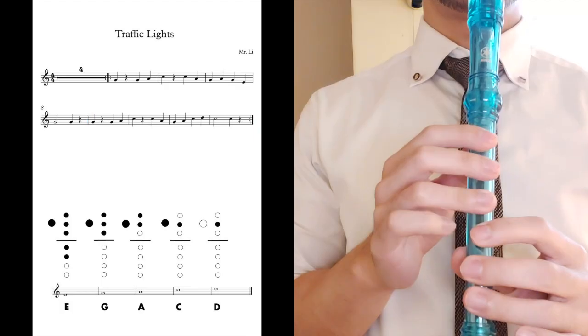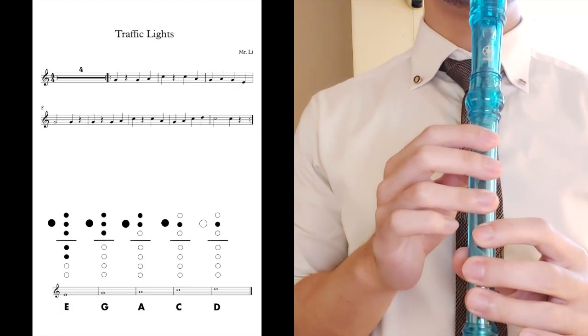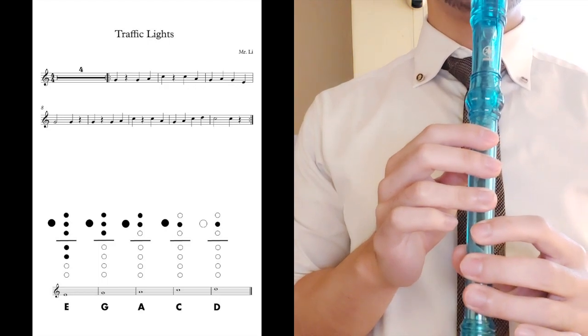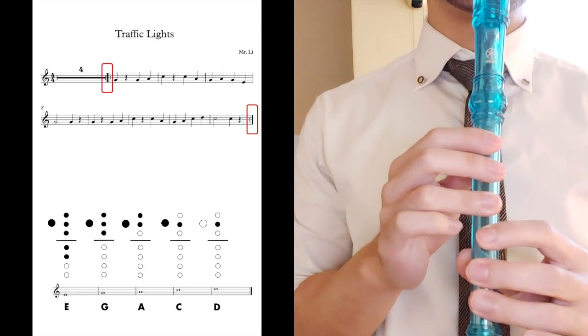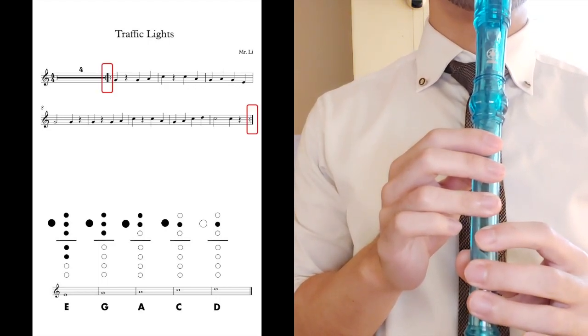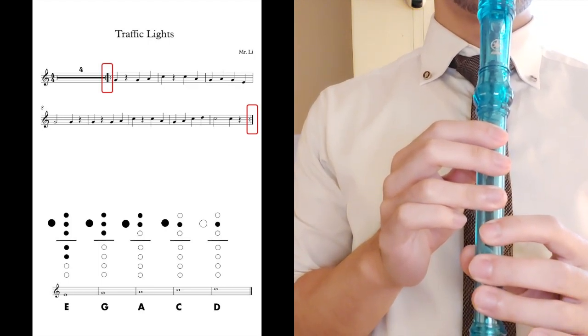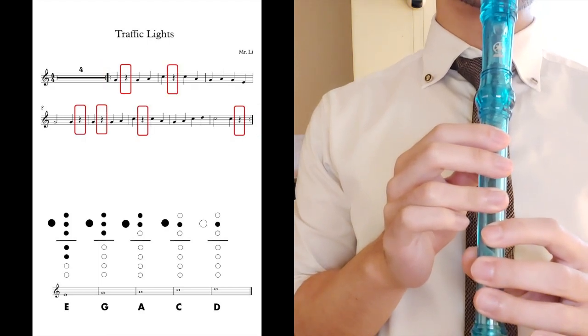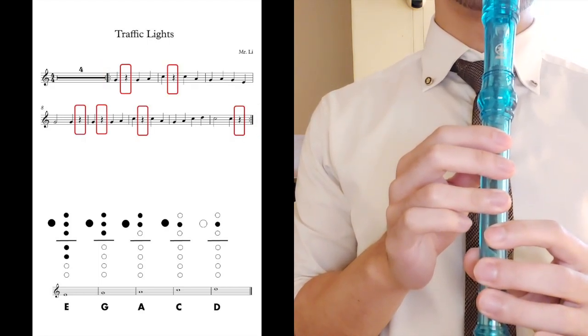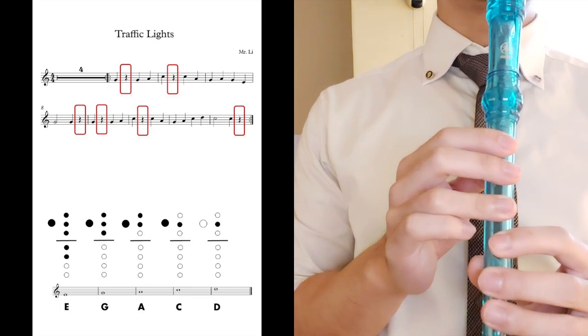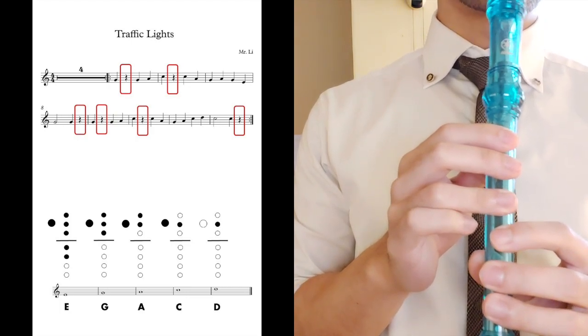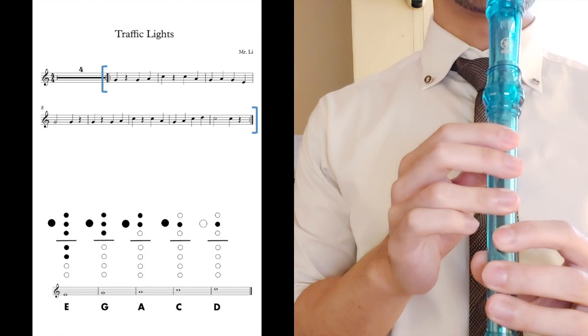Very nice. Let's start from bar 5 and we'll play till the end of the piece. Make sure you observe the repeat signs, so after you reach the end you have to go all the way back to bar 5 and play the melody one more time. Also, make sure you pay attention to the rest throughout the piece. We should never play our recorder during the rest.